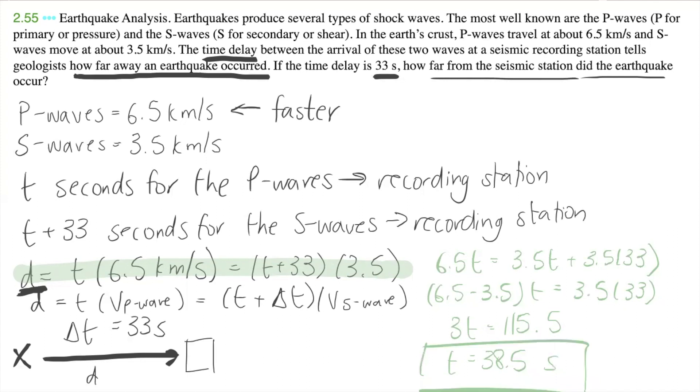And so now because we have our t time, then we can just plug in back into here and we can see what d is. So let's do that right here. So d is equal to 38.5 times 6.5. And what I get is 250.25 kilometers.